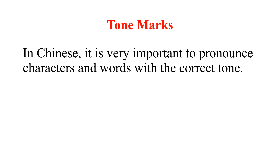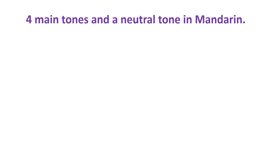So these are the tone marks. There are four main tones and a neutral tone in Mandarin. The first tone is called the flat tone. You can see the tone marks on top of the letter A, so you can read this as: A.